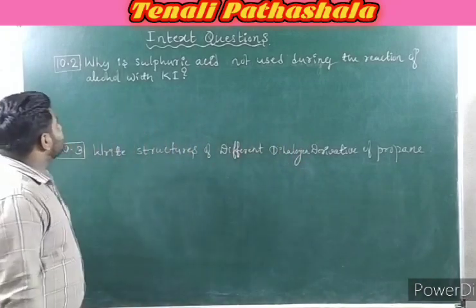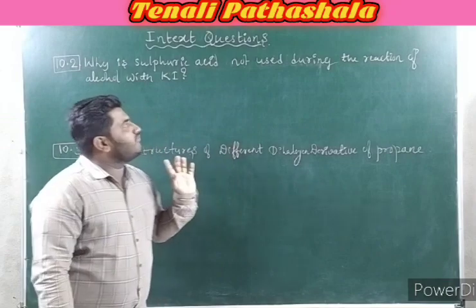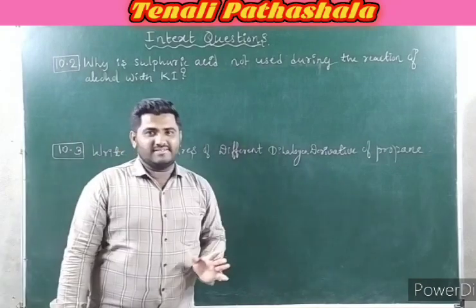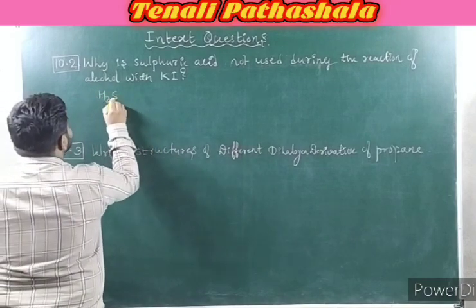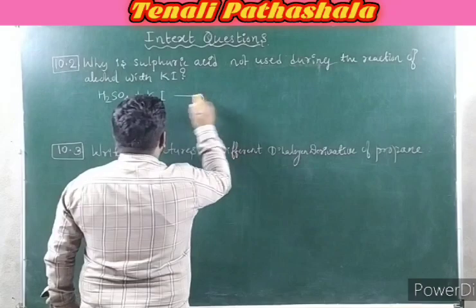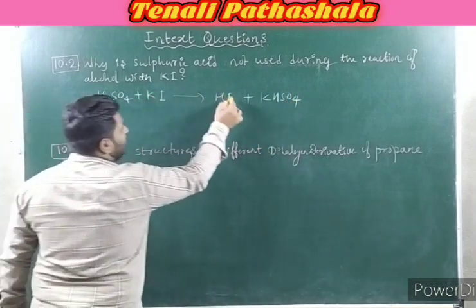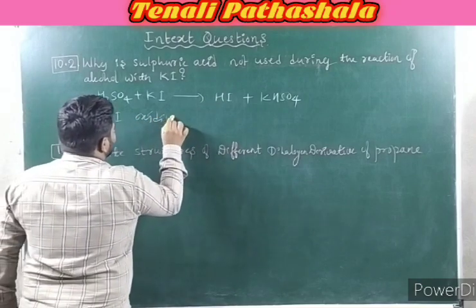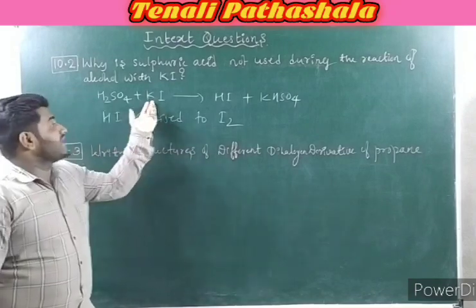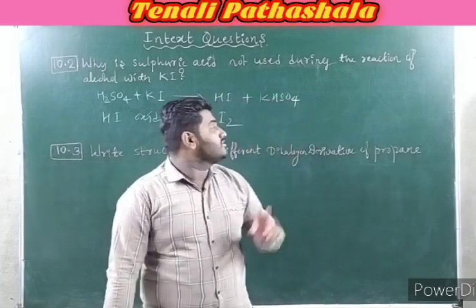Let us start with the in-text question first. Let's see example 10.2: Why is sulphuric acid not used for the reaction of alcohol with KI? Because when you take sulphuric acid and add it to KI, this sulphuric acid oxidizes KI into HI plus KHSO₄. So sulphuric acid converts KI into HI. Then HI is further oxidized into I₂. Meaning there is no KI remaining in the reaction, because KI is converted into HI and HI is oxidized into I₂.